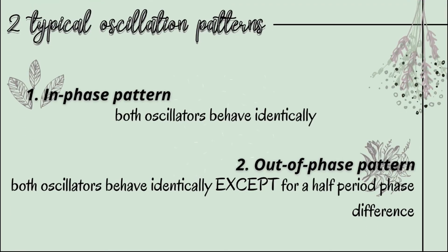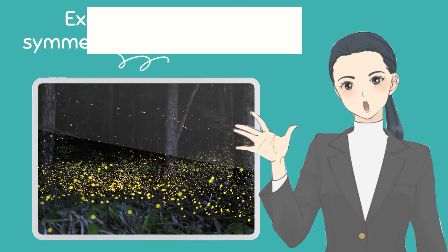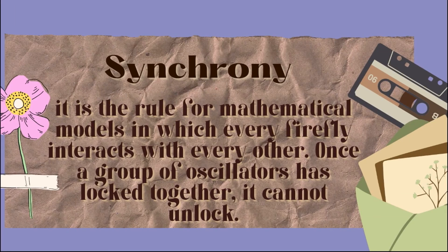There are presently two typical oscillation patterns. First, we have what we call the in-phase pattern, wherein both oscillators behave identically. Next, we have an out-of-phase pattern, in which both oscillators behave identically except for a half-period phase difference. We must always remember that the faster an animal moves, the less symmetry its gait has, meaning more speed breaks more symmetry. It is biologically important that symmetry is not broken. For example, the swarms of fireflies in Southeast Asia. In relation to this, we have synchrony — it is the rule for mathematical models in which every firefly interacts with one another. Once a group of oscillators has locked together, it cannot be unlocked. The big message in both locomotion and synchronization is that nature's rhythms are often linked to symmetry, and the patterns that occur can be classified mathematically by invoking the general principles of symmetry breaking.